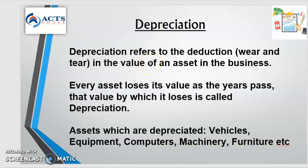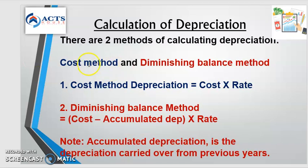There are two methods with which we depreciate assets. Remember, some of the assets that get depreciated are vehicles, equipment, computers, machinery, and furniture. The first method is the cost method. It's straightforward — you just take the cost of the asset and multiply it by the rate of depreciation, which they'll give to you. The second method is called the diminishing balance method.